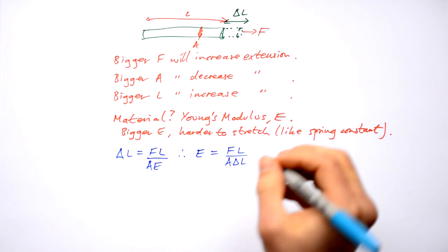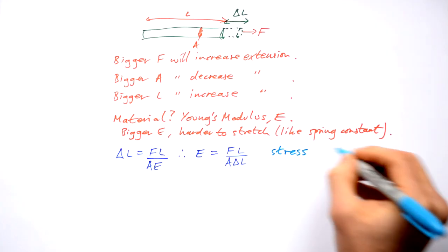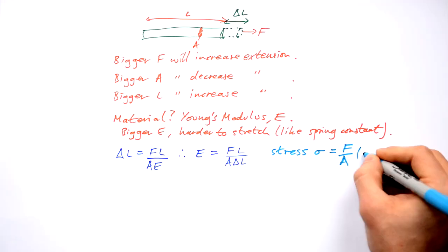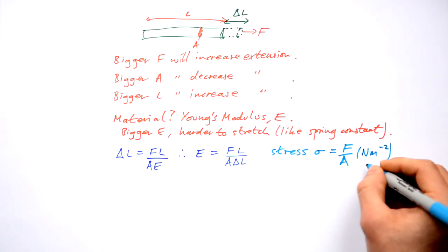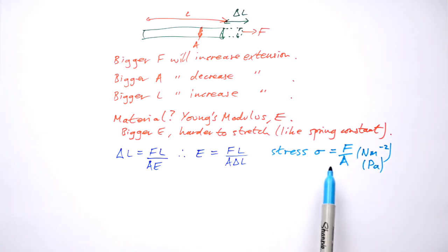Now a couple of other definitions. When we talk about materials we've got something called stress and we give it the symbol sigma. Stress is very similar to pressure and it has the unit newtons per meter squared. That's also known as pascals. Generally we use stress when we're pulling something and pressure when we're pushing something.